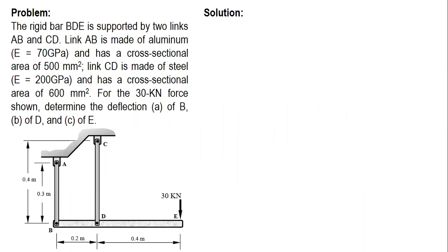The rigid bar BDE is supported by two links AB and CD. Link AB is made of aluminum with modulus of elasticity E = 70 GPa and has a cross-sectional area of 500 mm².